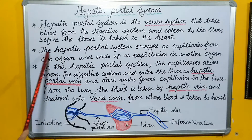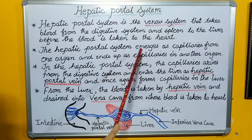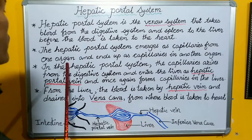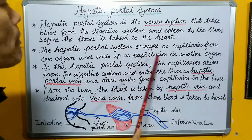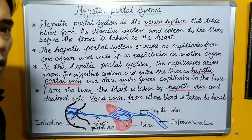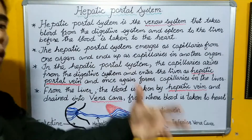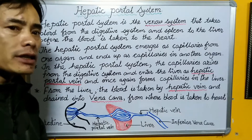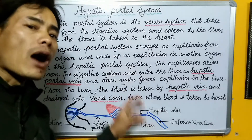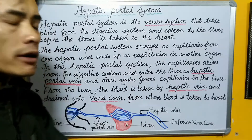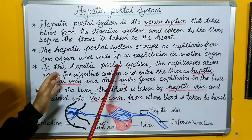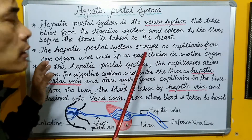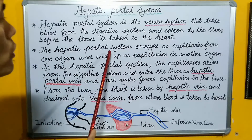Here, the hepatic portal system is emerging as capillaries from one organ and ends up as capillaries in another organ. Since this is a portal system, it emerges as capillaries and ends up as capillaries from one organ to another organ, and in the hepatic portal system the same thing can be observed.